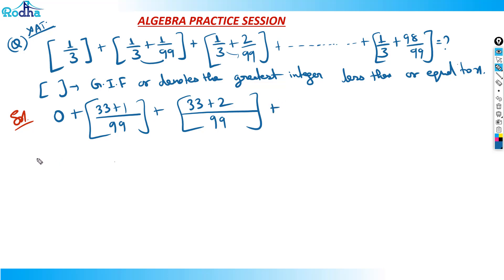So you got the pattern. This is 34 by 99, this is 35 by 99, and this will keep going. What is the last number? The last number is 33 plus 98, which is 131 by 99. So if you add these values - 0, 34 by 99, 35 by 99, ending at 131 by 99.